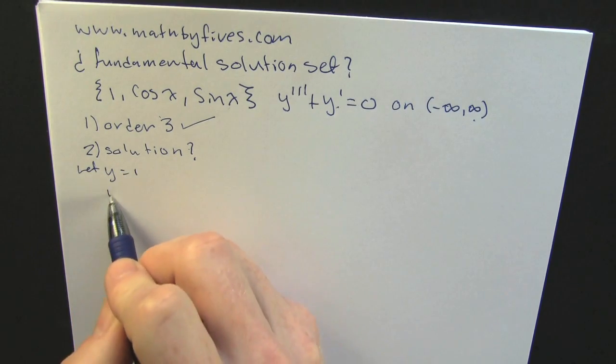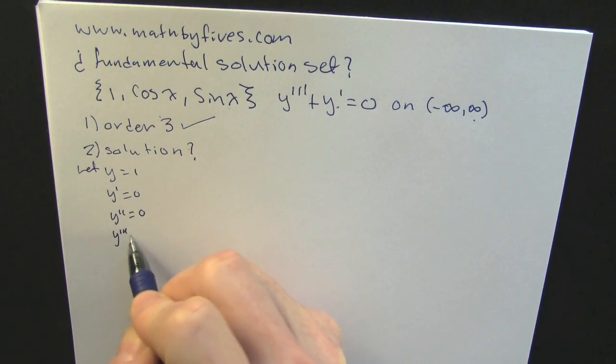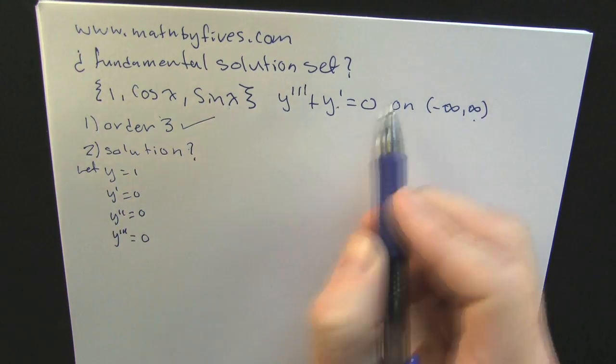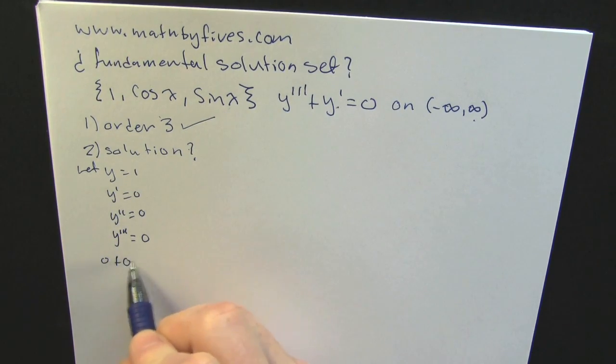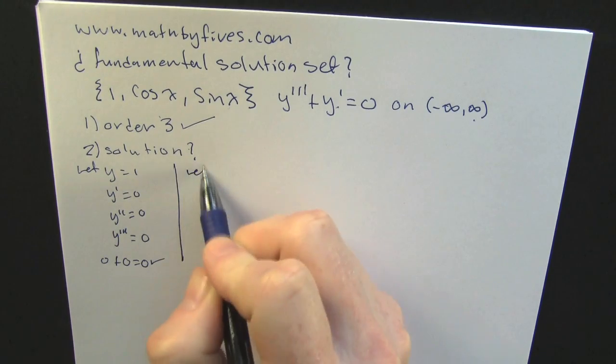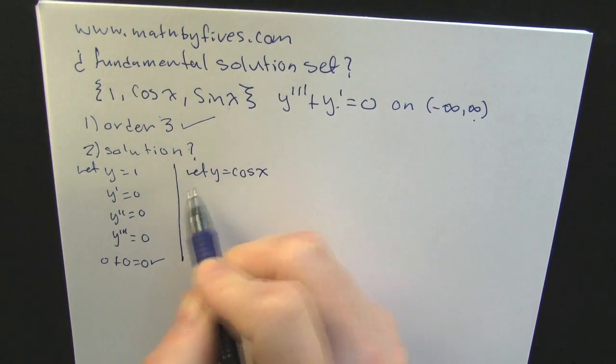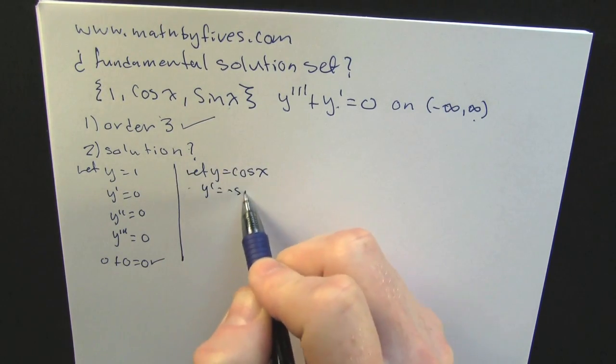Now we need to check to see if each one of those three is a solution to that differential equation. The writer takes that first element one, differentiates it three times, plugs it in, and finds that zero is equal to zero. Fabulous.